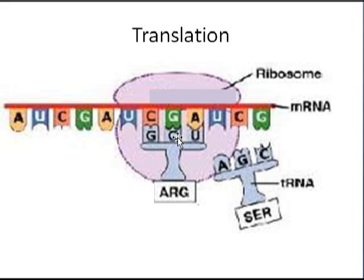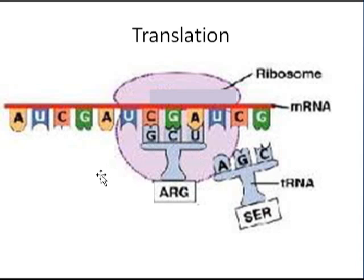Once the tRNA attaches with its complementary nucleotide, it drops off its amino acid — which in this case is ARG — and then the tRNA leaves. So what happens is a chain of amino acids starts growing. And that is what makes a protein: a chain of amino acids. So that is translation.